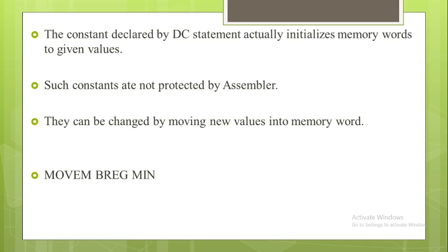Such constant values are not protected by the assembler — they may be changed by moving new values into the memory word. For example, the constant MINIMUM value can be changed by: MOVEM B Register MINIMUM.